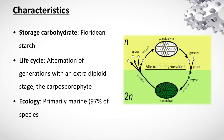Characteristics: storage carbohydrate is floridean starch. Life cycle shows alternation of generation with an extra diploid stage called the carposporophyte. Ecology: primarily marine — 97 percent of species are marine.